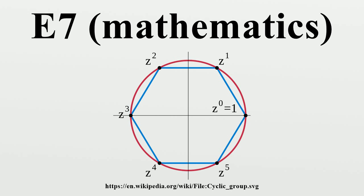The Weyl group of E7 is of order 2,903,040. It is the direct product of the cyclic group of order 2 and the unique simple group of order 1,451,520.